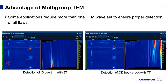The advantage of multi-group: your inspection may require multiple different wavesets to adequately cover the inspection area. In this example of an ERW weld, the first flaw was better detected using the self-tandem 3T waveset for detection of the ID over-trim, while the second flaw was better detected with the first-leg pulse echo method for detecting the corner trap of a hook crack. In this inspection, only three groups were required. However, the OmniScan X3 can go up to four simultaneous TFM groups.